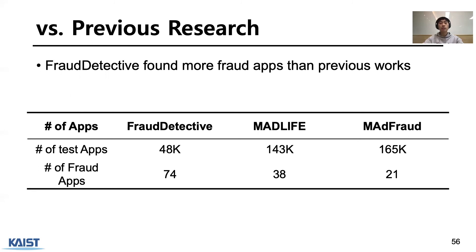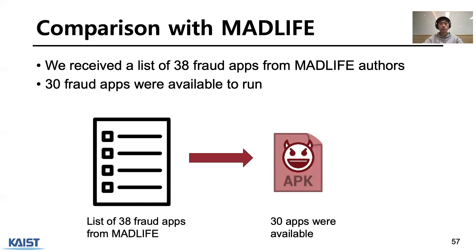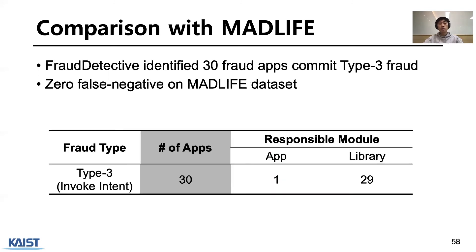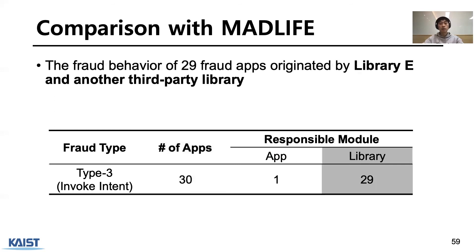We received a list of 38 apps from the MAD Life authors. Among these 38 fraud apps, 8 were duplicated or unable to run. We analyzed the remaining 30 apps with Fraudetective. Fraudetective successfully reported 30 fraud apps with no false positives. All 30 apps commit Type 3 fraud — cross-app intent invocation without any interaction — and Fraudetective found that the fraud-responsible module originates from Library E and another third-party library.